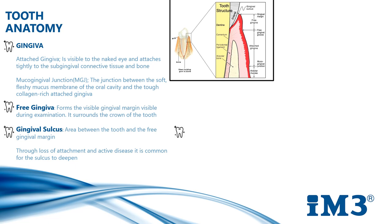The free gingiva forms a visible gingival margin during examination. It surrounds the crown of the tooth. The gingival sulcus is the area between the tooth and the free gingival margin — the crevice that surrounds the tooth. The normal sulcus depth is 0.5 to 1 millimetre in cats and 1 to 3 millimetres in dogs.